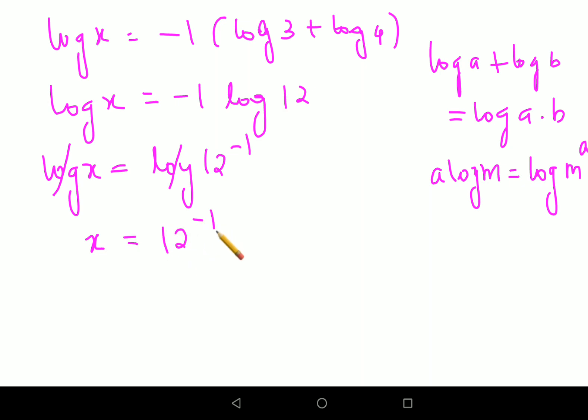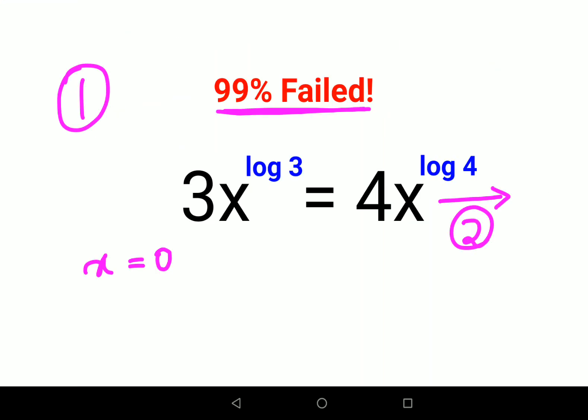So now coming back to your final question, we had this one answer as x equals to 0, another is 12 raised to minus 1, or we can say 1 upon 12. I hope this is very very clear to everyone.